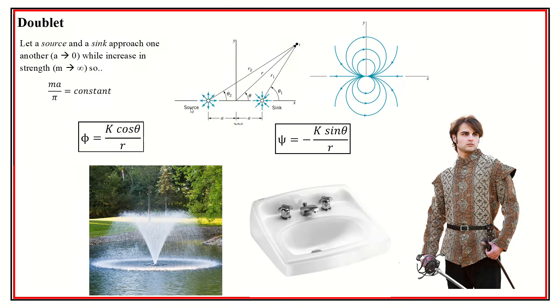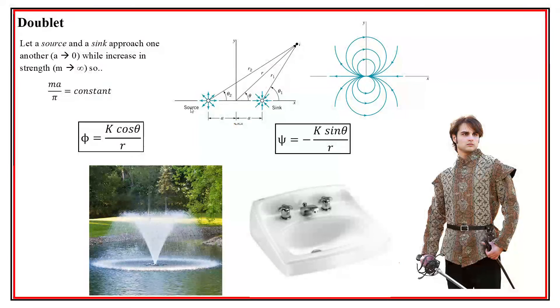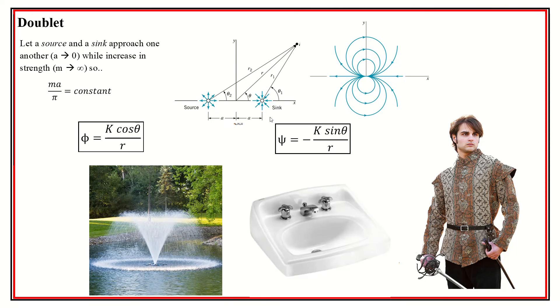So, okay, so when you combine a source and a sink nearby each other, you get a doublet. And you can move, and this is very weirdly conceptual, you can get a doublet by making the source and a sink get closer and closer and closer together. And it's really hard to conceive that that can happen, but it can.